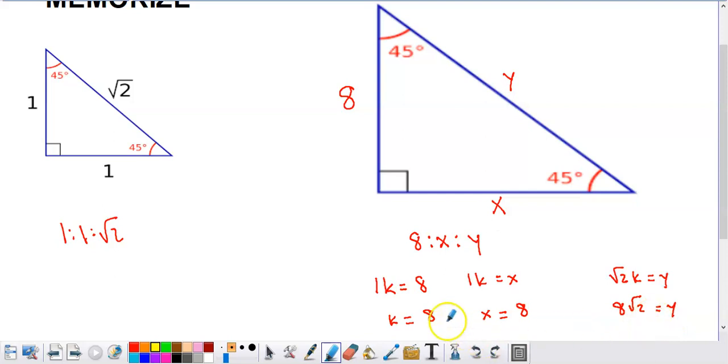If I check the Pythagorean theorem, eight squared plus eight squared, that has to equal eight square root of two squared. You'll be able to confirm that it does. So this is a right triangle. We've got the side measures that we needed.